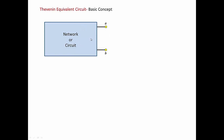Now this network has an equivalent circuit to it — it's called the Thevenin equivalent network or the Thevenin equivalent circuit. This big network can essentially be simplified into a voltage source in series with a resistance. The voltage source is called V-Thevenin and the resistance is called R-Thevenin. This is an extremely important and powerful technique used in solving circuit problems.